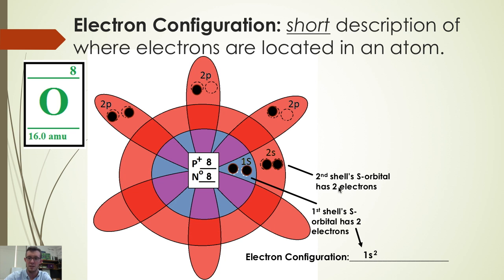Because the second shell's s orbital has two electrons, chemists will write this as 2s².